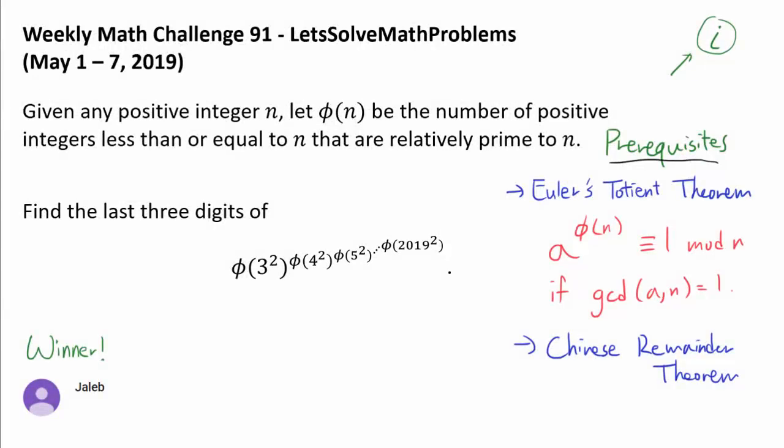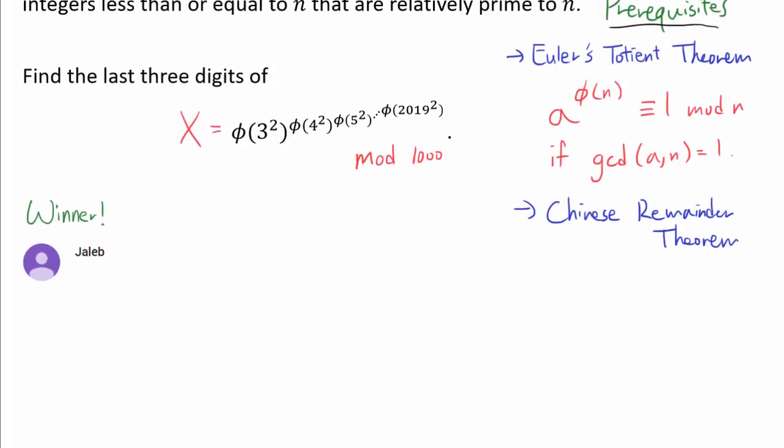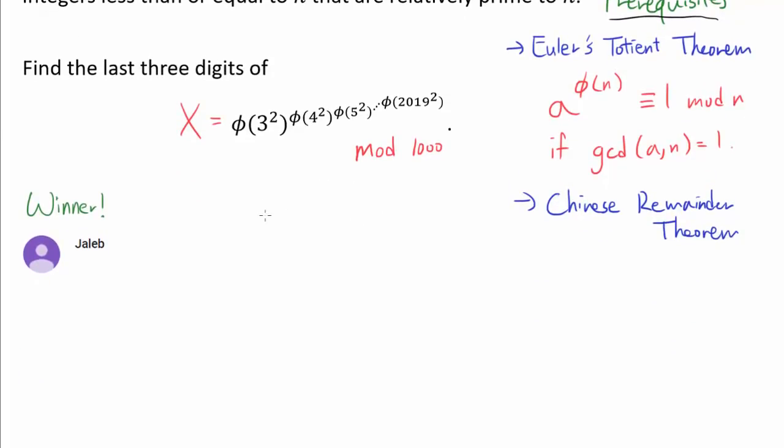We wish to find the final three digits of this phi exponent tower starting with phi of 3 squared stretching all the way to phi of 2019 squared. We are concerned with evaluating this mod 1000, and for convenience I will label the entire thing X. By the Chinese remainder theorem, we don't have to evaluate this mod 1000. That would be very cumbersome. We can simply evaluate this mod 8 and mod 125, then combine the results to find X mod 1000.